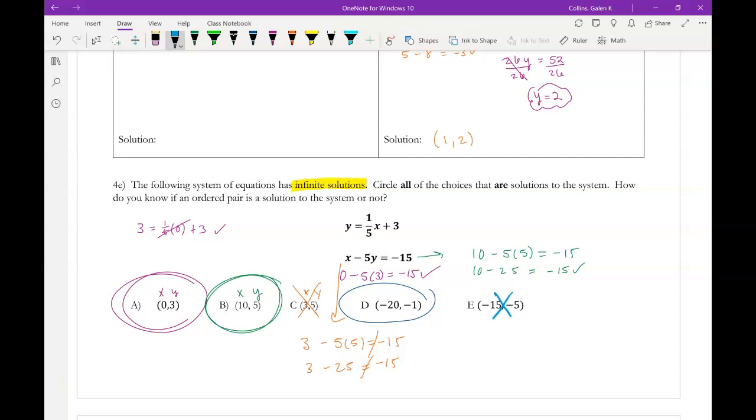So going back to the question, how do you know if an ordered pair is a solution to the system or not? Well, the ordered pair makes both equations true. So it satisfies both equations in the system. So like the very first choice we did A, we said it worked when we plugged it into the top equation in slope-intercept form. And it worked when we plugged it into the bottom equation in standard form. So, again, when a system has infinite solutions, not every single ordered pair out there is a solution. That's not what it means. But it means any ordered pair on the line. So if I think of this graph of y equals 1 fifth x plus 3, any point on the line is a solution.